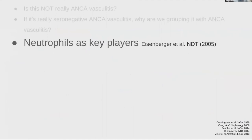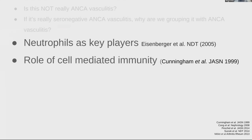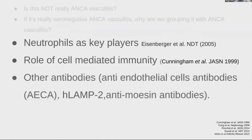Neutrophils are key players — biopsies consistently show neutrophils in glomeruli. Cell-mediated immunity is also involved: Cunningham et al. showed evidence of CD3 T cells, CD45 RO cells, and macrophages on biopsy in pauci-immune necrotizing vasculitis, which likely secrete cytokines that activate neutrophils. Anti-endothelial cell antibodies are present in up to 88% of ANCA-positive vasculitis and 53% of ANCA-negative vasculitis, and can independently activate neutrophils.